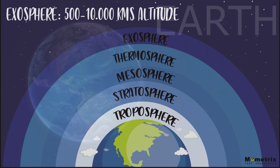And finally, the last layer is the exosphere, a layer that starts at an altitude of about 500 kilometers and ends, believe it or not, all the way out at about 10,000 kilometers away. It is a layer that barely has any gas at all, but there are still a few molecules of hydrogen and helium, which are the lightest gases on our planet.